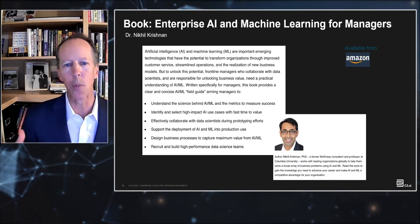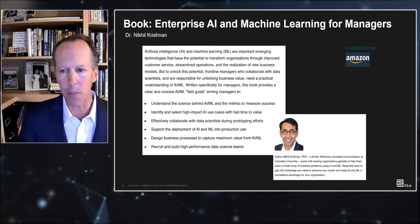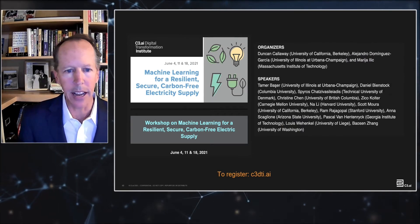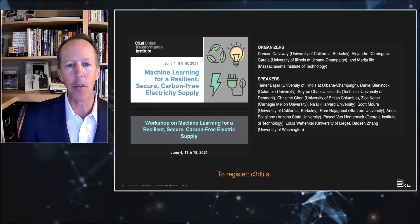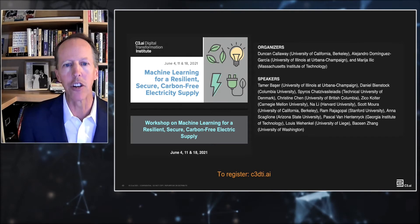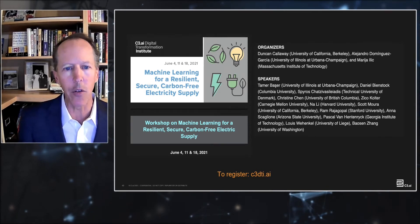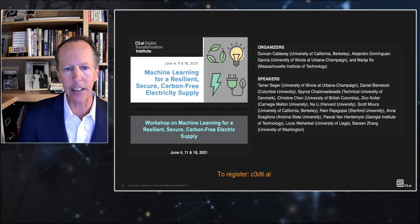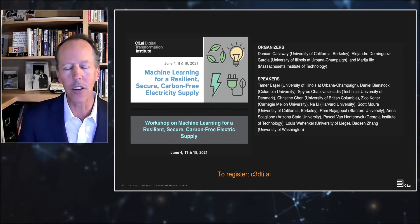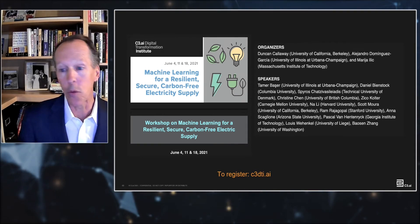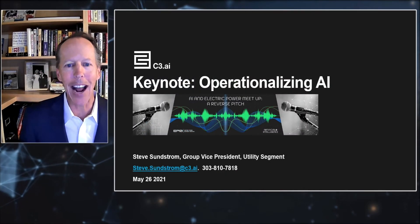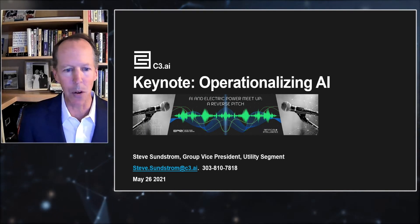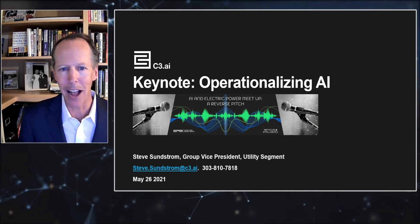For further learning, I recommend a book just released by Dr. Nikhil Krishnan called 'Enterprise AI and Machine Learning for Managers,' available on Amazon. Also, the C3 Digital Transformation Institute will be running workshops starting June 4th on machine learning for resilient, secure, carbon-free electricity supply — you can learn more at c3dti.ai.